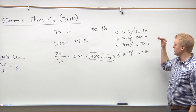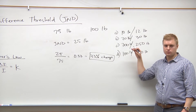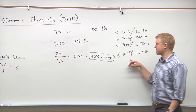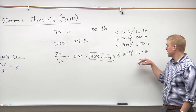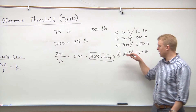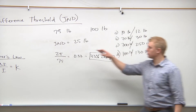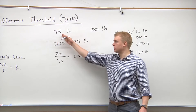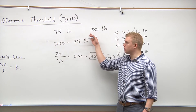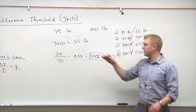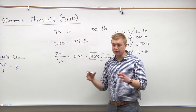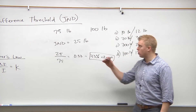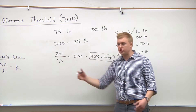Let's be careful here. At the original stimulus, the difference threshold was 25 pounds. So if you had anything greater than 75 where the difference was only 25 pounds, you could automatically knock that out — because as the original stimulus increases, so will the JND.